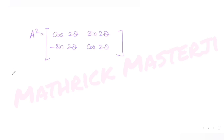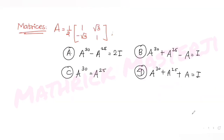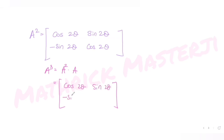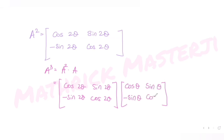Now let's find A³, since I want to figure out A raised to 25 and A raised to 30. I compute A³ = A² · A, multiplying [[cos 2θ, sin 2θ], [-sin 2θ, cos 2θ]] by [[cos θ, sin θ], [-sin θ, cos θ]].